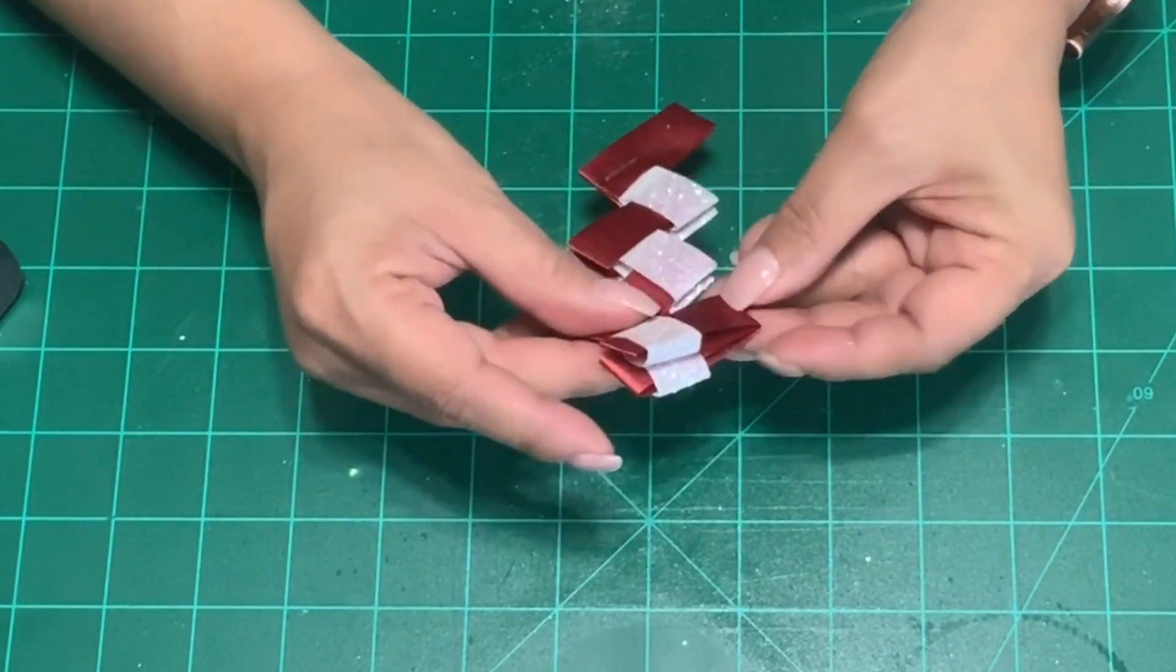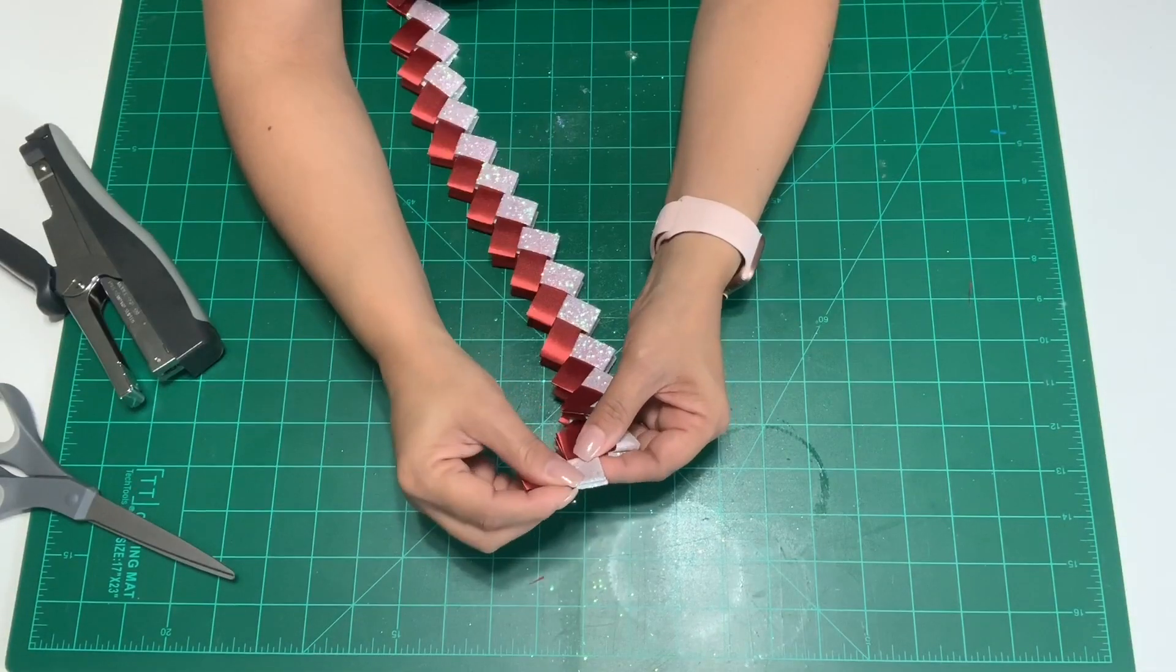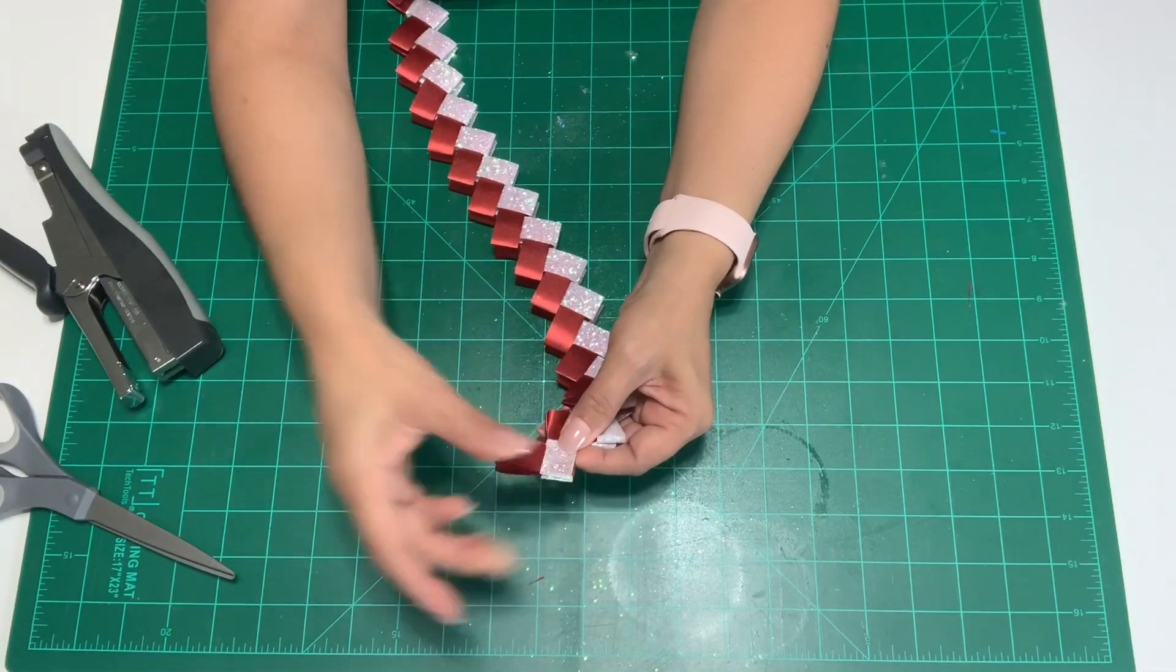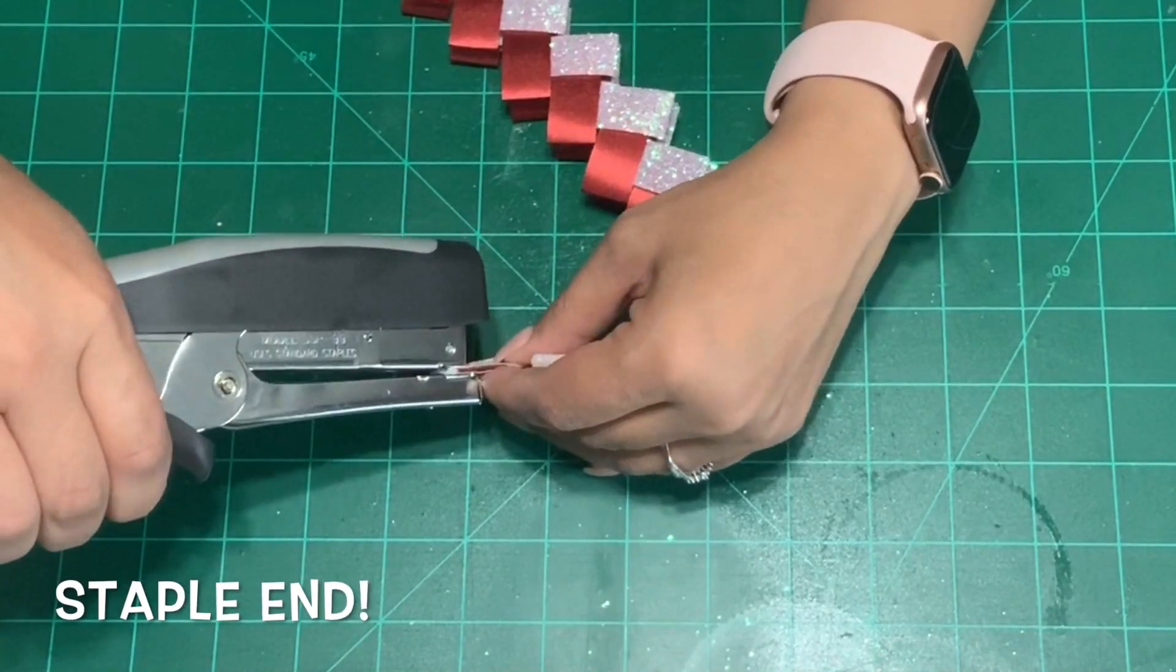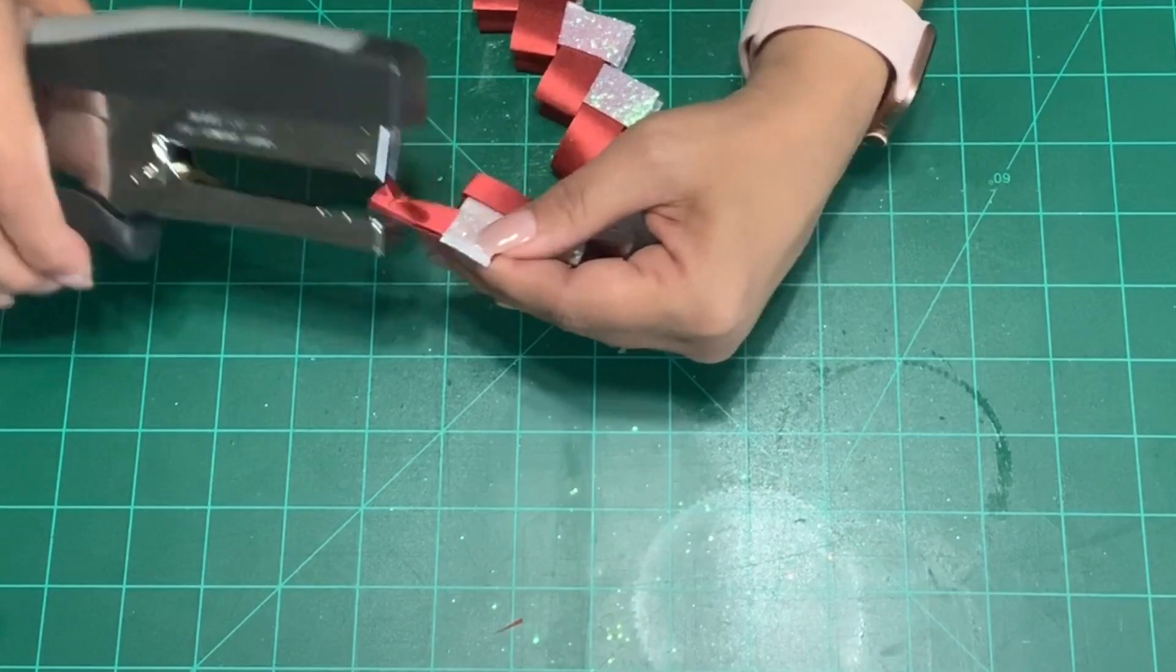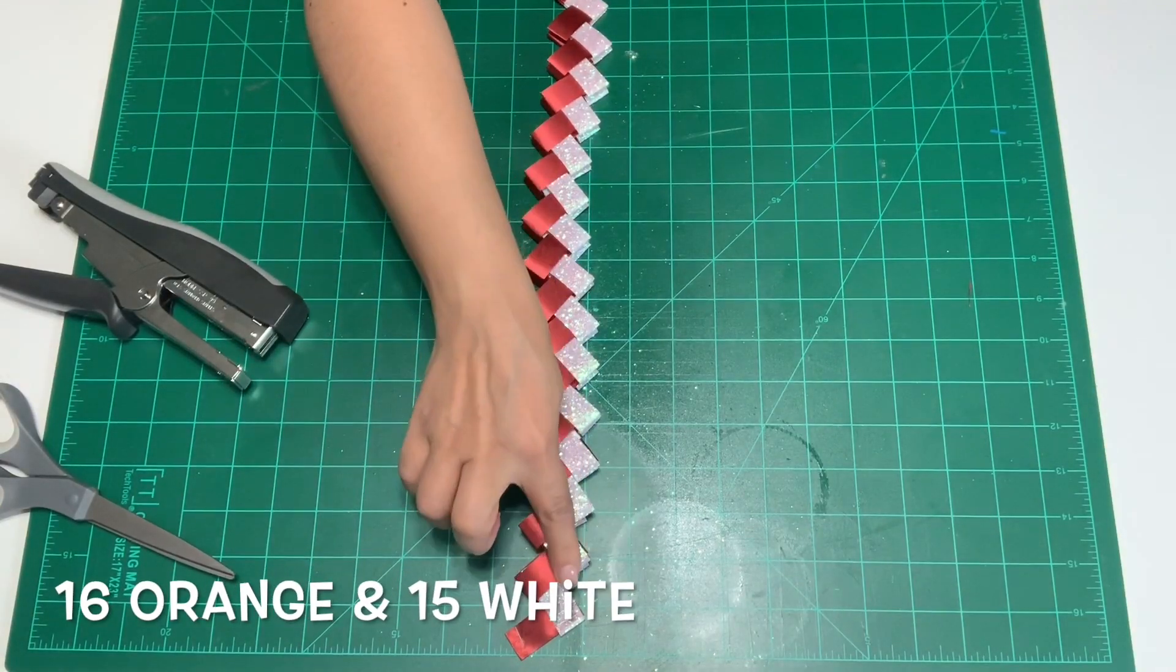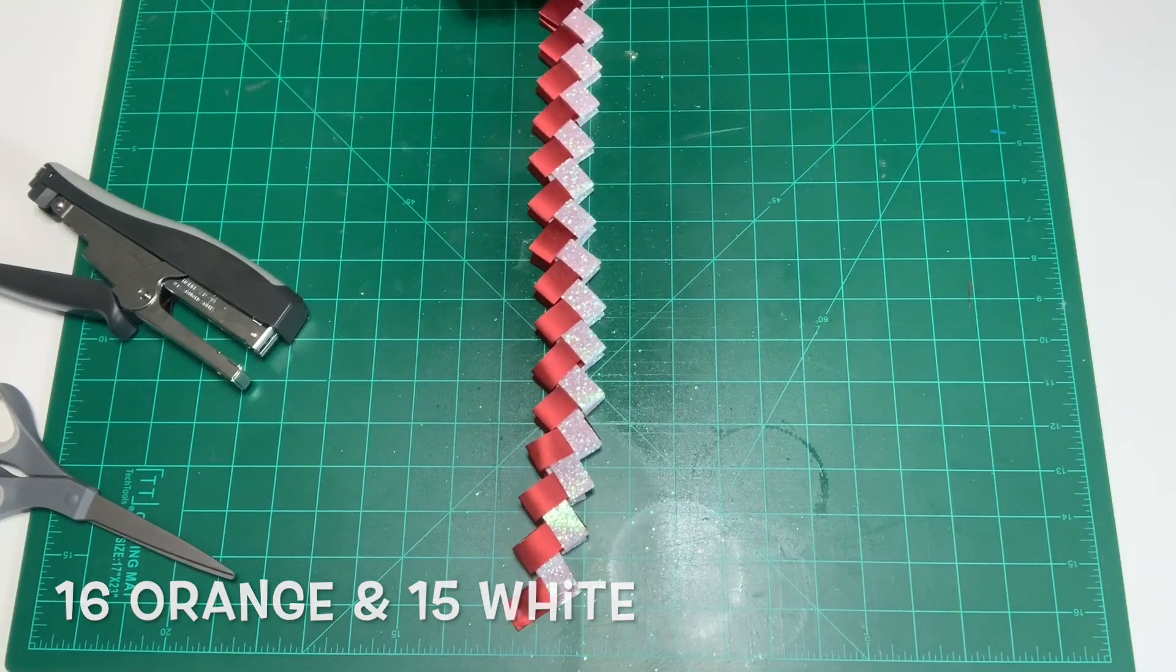Today I'm going to be doing an 18 inch long chain. When you get to the last one you'll staple the end. I'll staple where the white and orange meet and then I'm going to put another staple on this end. So again on this side I have 16 orange and on the other side I have 15 white.